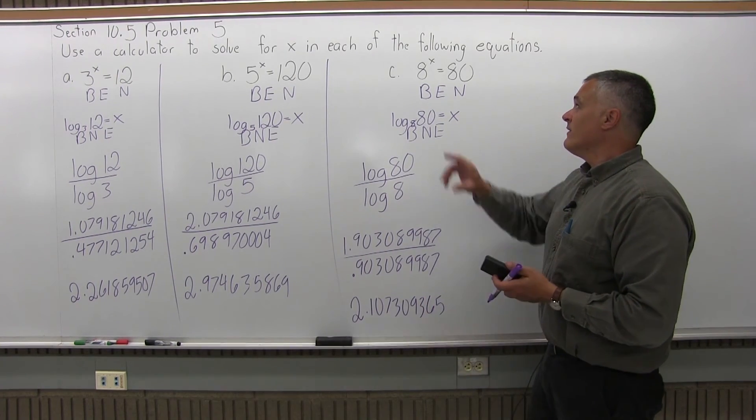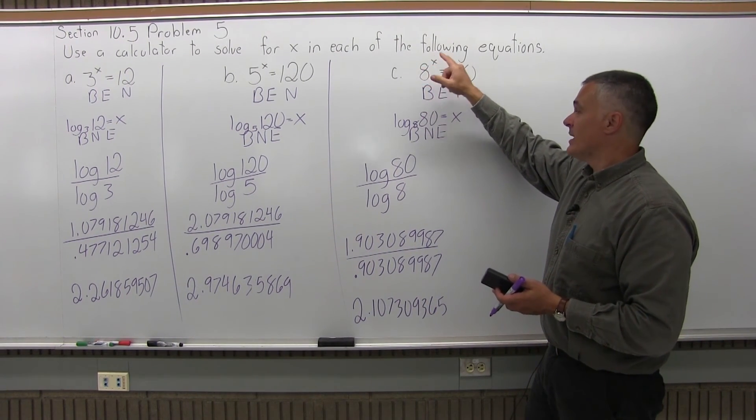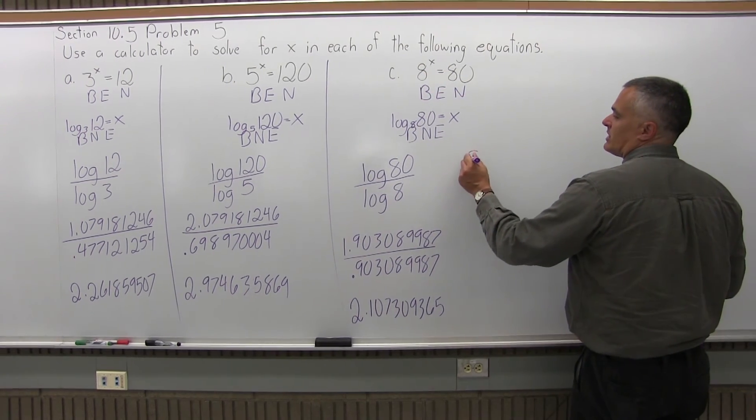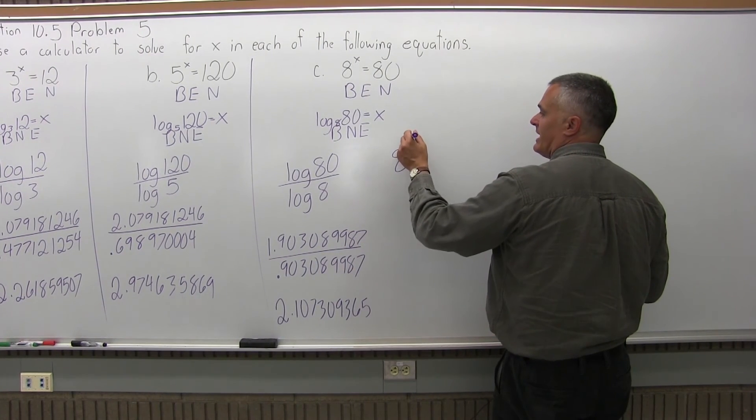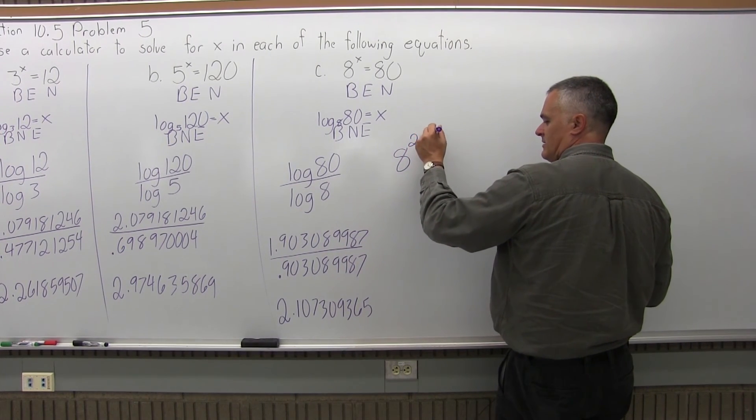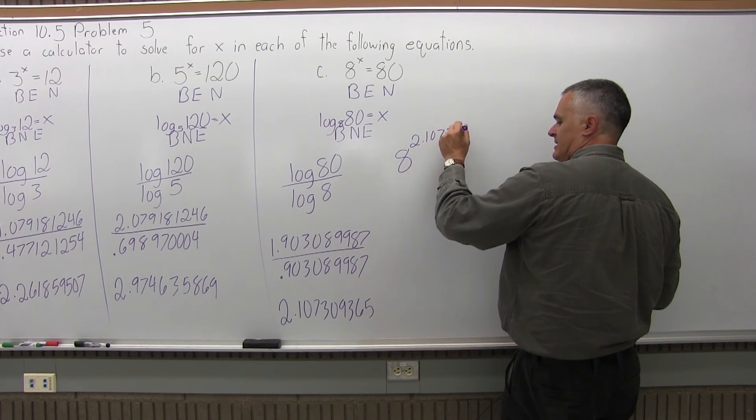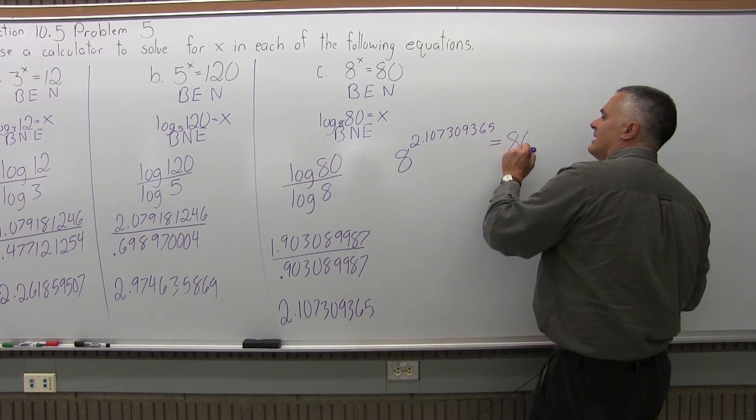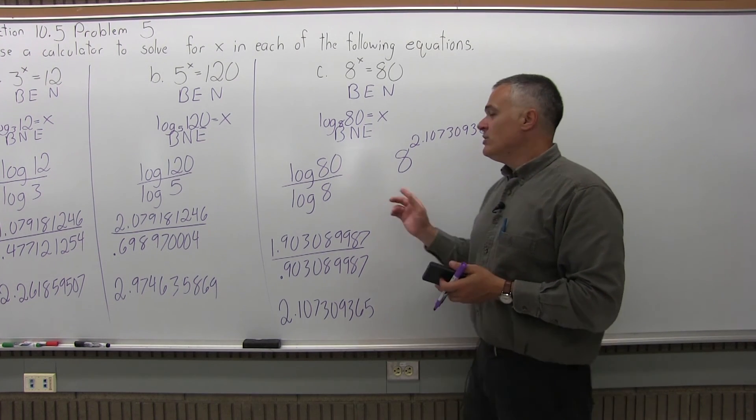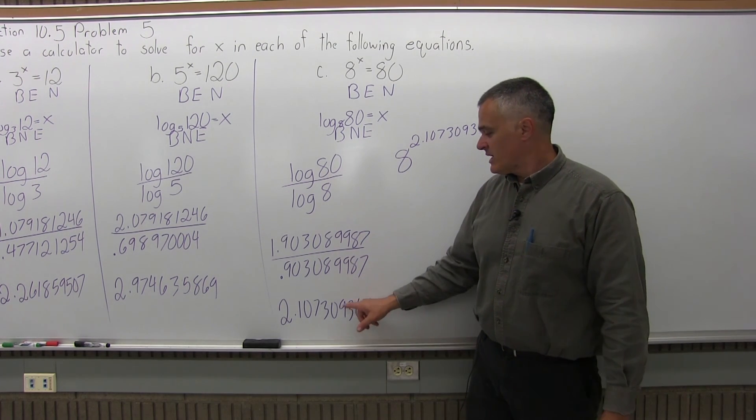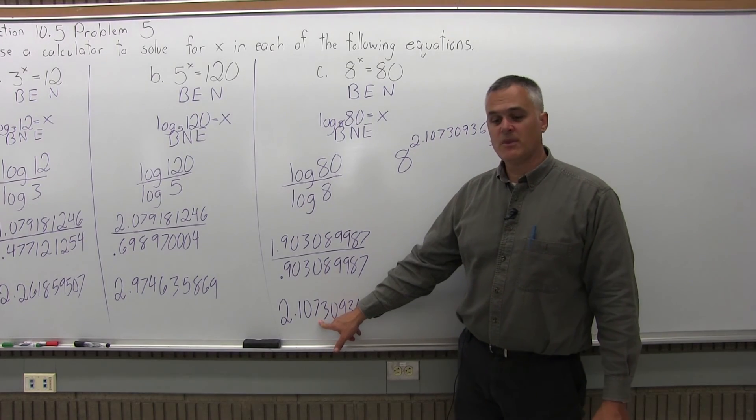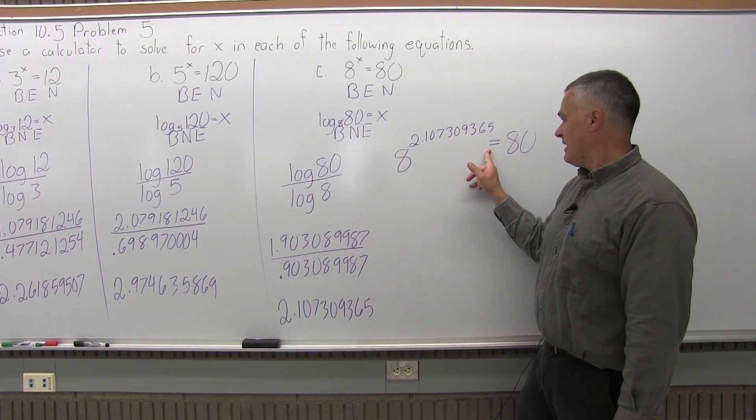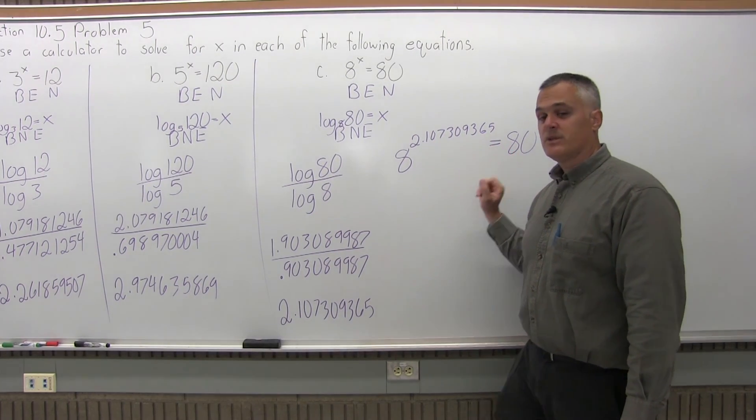So again, what we have found is the exponent for 8, where you raise it to that power to give you an 80. So just to write the whole thing out, 8 to the x power, so 8 to the 2.107309365 power equals 80. And like the others, you can verify that with your calculator fairly quickly. Once you've gotten to the end of the problem, store that into your memory, clear the screen, put 8, press your exponent button, recall your memory, hit equals, and the calculator will say 80.